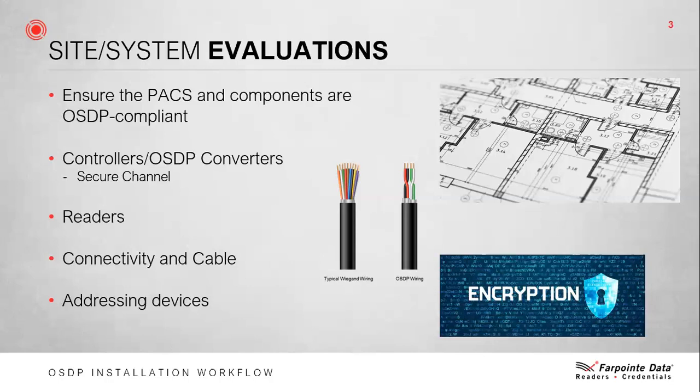System topology options: OSDP supports two distinct wiring topologies — point-to-point, which is more traditional, or multi-drop via the RS-485 communication protocol. Having these two options can be beneficial. If you're retrofitting an existing system, there's a strong chance you will be dealing with point-to-point topology, where all devices are wired directly from a door to a terminal strip or connector on a controller. OSDP can be deployed in this manner and you can likely utilize the existing wire, but you should inspect it first. OSDP also supports multi-drop topology.